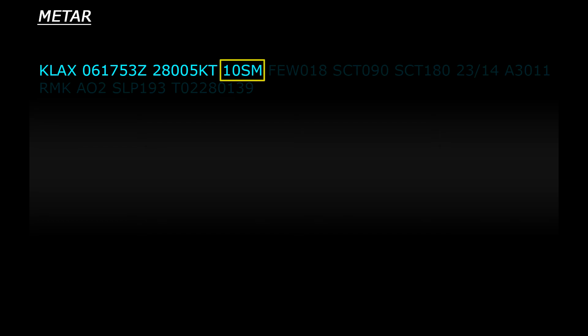Now next we have our first main difference. In North American METARs the visibility is normally given as statute miles. So in this case it's 10 statute miles, which is obviously very good visibility.